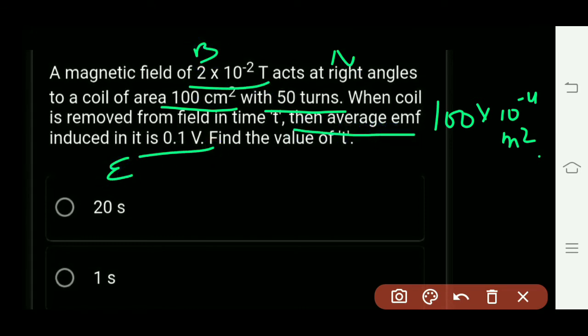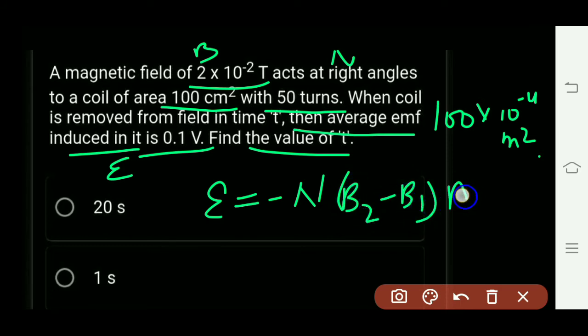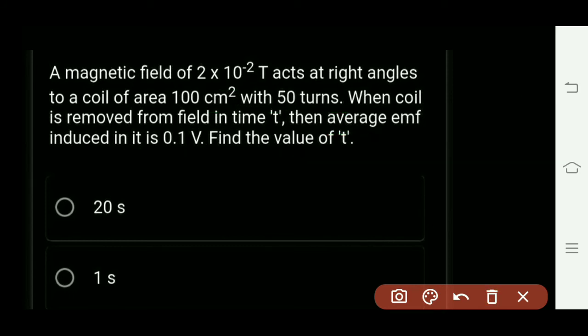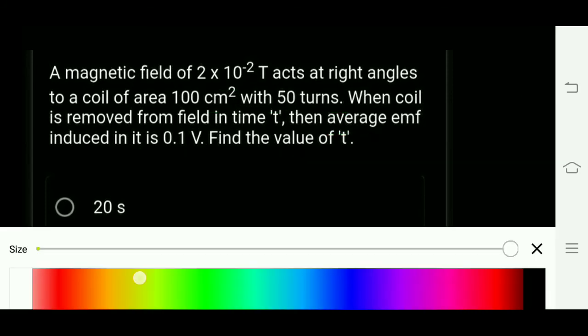...of E, the average emf induced (that means E average) is given, so we need to find the value of t. So for finding the value of t, we apply the formula: E = N(B₂ - B₁)A cos θ / t. That means final minus initial value of magnetic field. We need the value of t, so we simply rearrange: t equals...